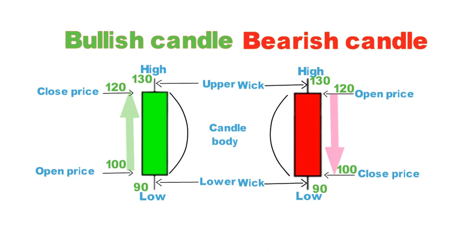Don't worry about the time frame. If you take a daily time frame, every candle indicates one day. If you take a weekly time frame, every candle indicates one week — Monday to Friday. If you take a monthly time frame, every candle indicates one month, the 1st to the 31st. Whatever time frame you take — one minute, five minutes, or 15 minutes — the candlestick pattern remains the same.